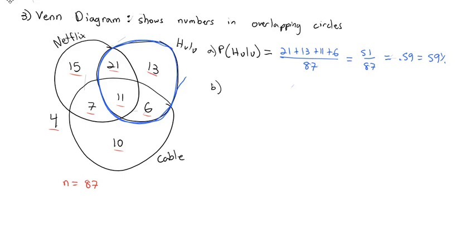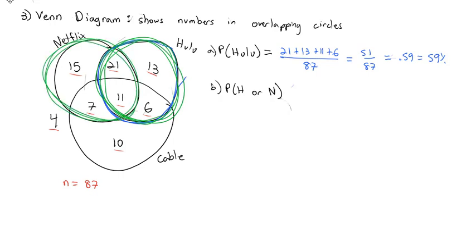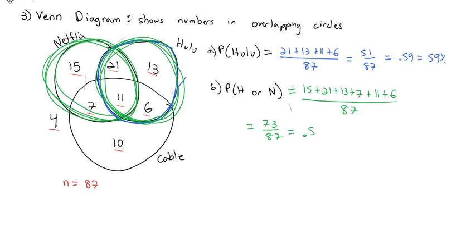We can also do compound probabilities using the Venn diagram. For the probability someone subscribes to Hulu or Netflix, or means either one or both, so we look at both circles. There's 15 plus 21 plus 13 plus 7 plus 11 plus 6 out of the total of 87 people, giving us 73 out of 87, or approximately 0.84, or 84%.